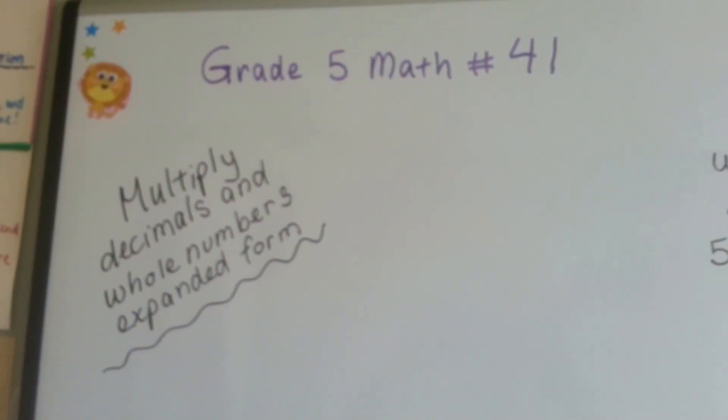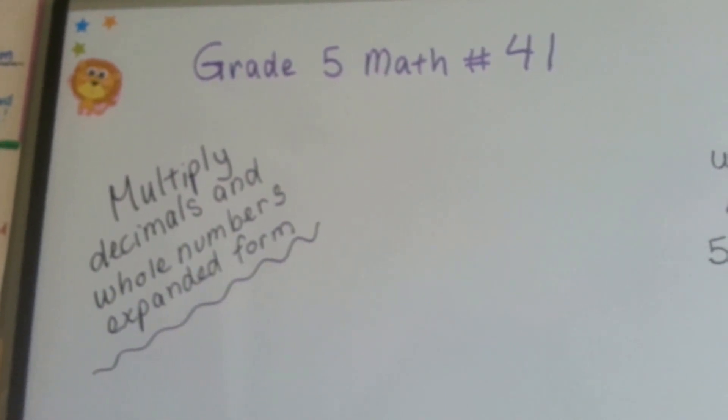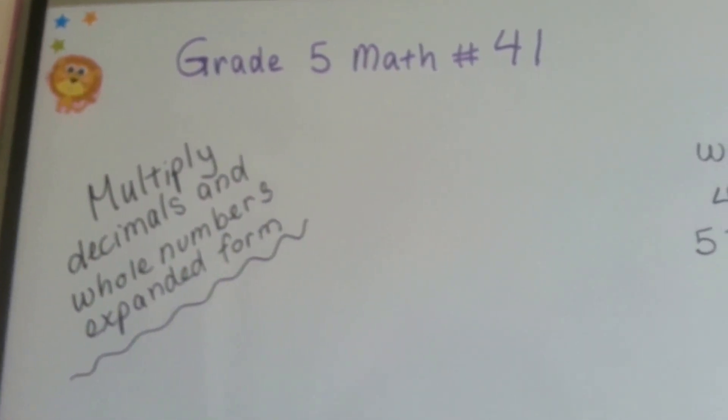Grade 5 math, number 41: multiply decimals and whole numbers using expanded form.